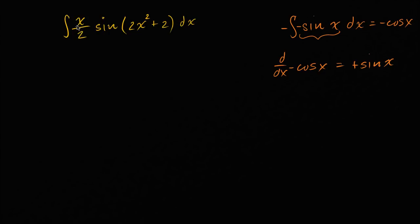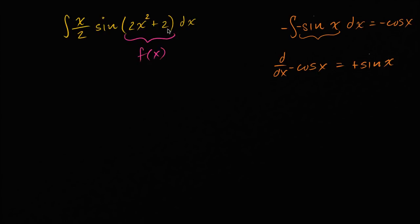What your brain might be doing — or what it will start to do once you get enough practice — is say, well, this is interesting. This kind of looks like the derivative of this. If we were to call two x squared plus two as f of x, what is f prime of x? Well, f prime of x is going to be four x.